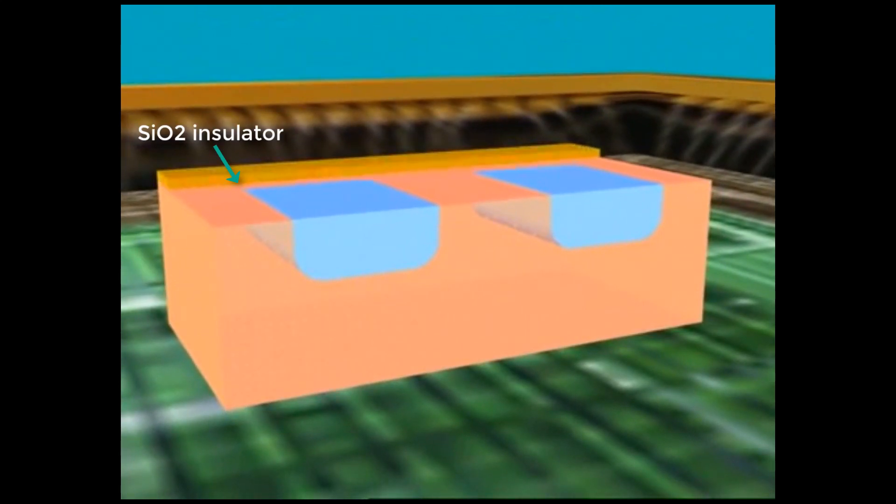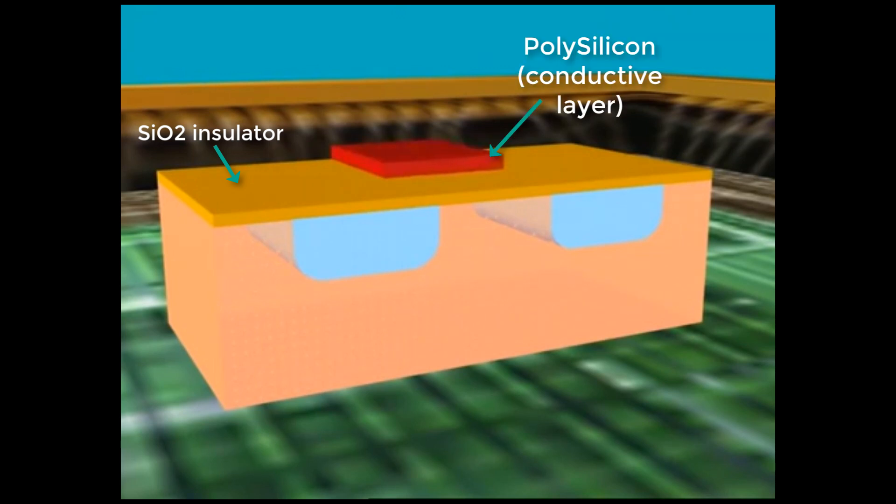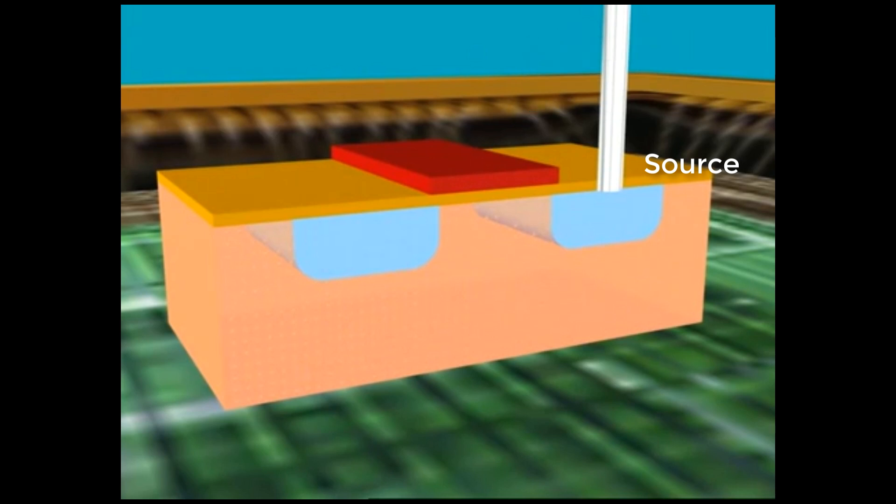An additional layer consists of silicon oxide and acts as an insulator. A layer of electrically conductive polysilicon is applied on top of it. Every transistor has three connections. The middle one is attached to the gate, the electrically conductive polysilicon.